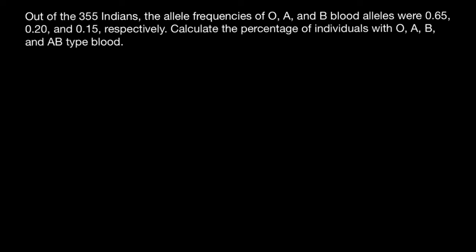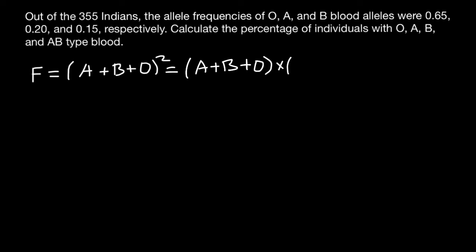Today we have three alleles and four blood groups, so this is going to be an advanced level Hardy-Weinberg problem. Here's the formula — the frequency of the genotypes would be as follows. We have in our gene pool three alleles: allele A plus allele B plus allele O, all squared. We have one locus, and in this locus we can find allele A, B, and O. The two here stands for the diploid organism.